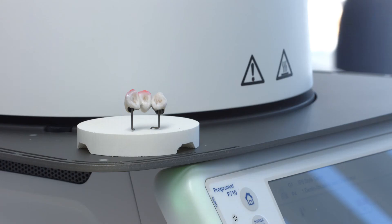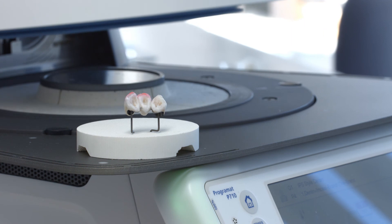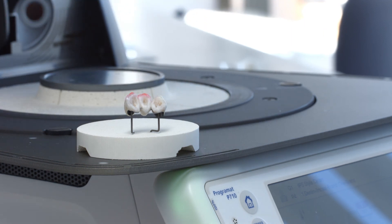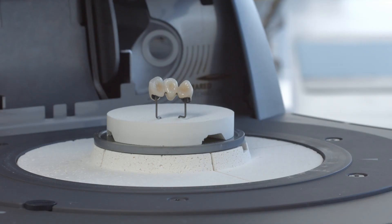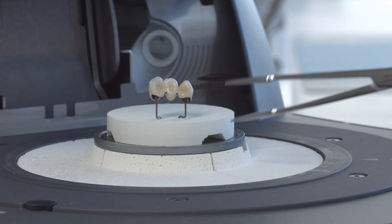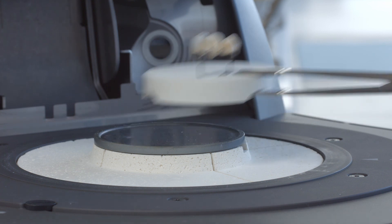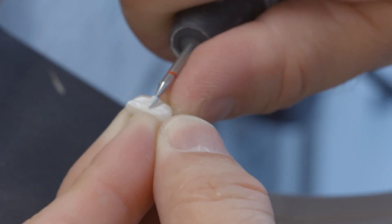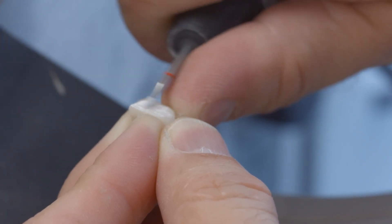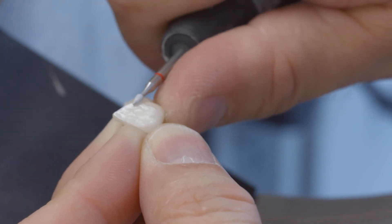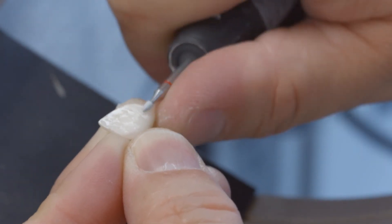Place the restoration on the firing tray and fire the restoration using the second dentin and incisal firing parameters. Remove the firing tray from the firing chamber only once the furnace head is completely open and the acoustic signal has sounded. Finish the completely layered and fired bridge and prepare it for the application and firing of the stains and glaze.